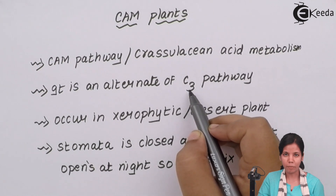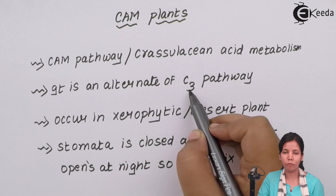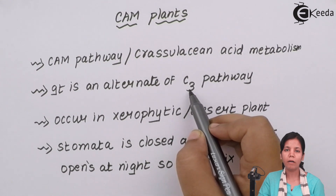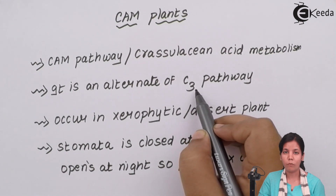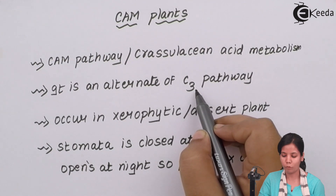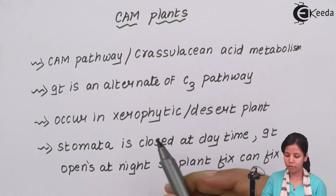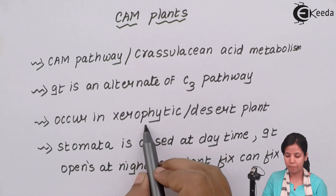In certain plants the C3 pathway takes place, whereas in desert plants the C4 pathway takes place. For example, millets — Ragi or Nachani — follow the C3 pathway, whereas desert plants follow the C4 pathway, or what we call the CAM pathway. This occurs in desert plants and xerophytic plants.